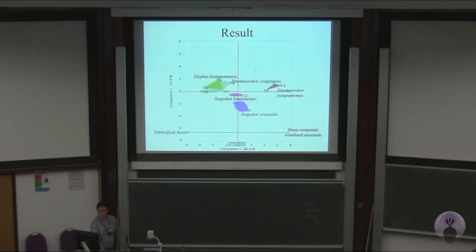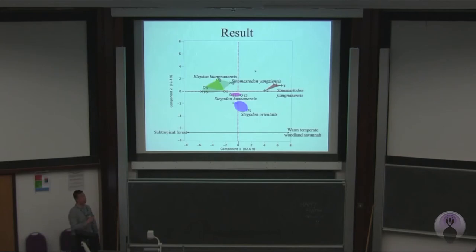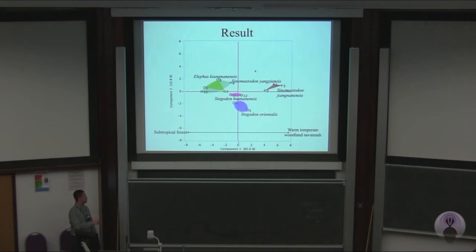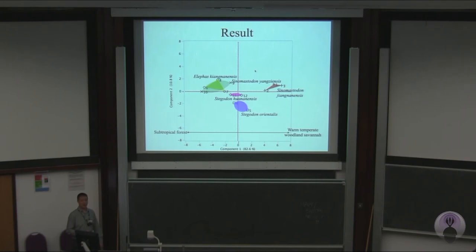So what have we found? The results are the most exciting bit. We can see a strong habitat and ecological signal from this plot. From the associated faunas that the fossil proboscideans were found alongside, most of the forest-dwelling taxa are on the left, with more open-habitat-dwelling proboscideans on the right. Interestingly, the two species of Sinomastodon are actually quite far apart on this plot, despite both having very similar bunodont morphology.